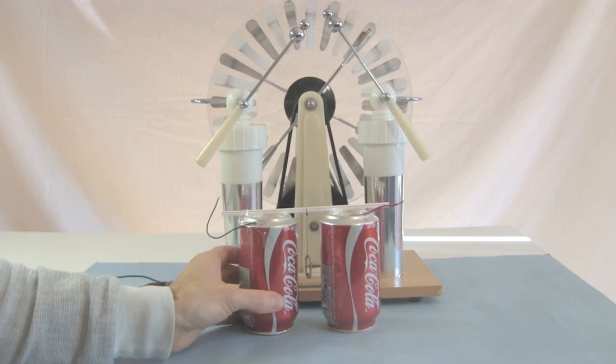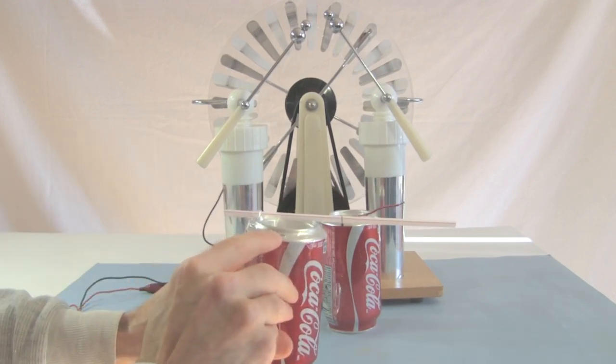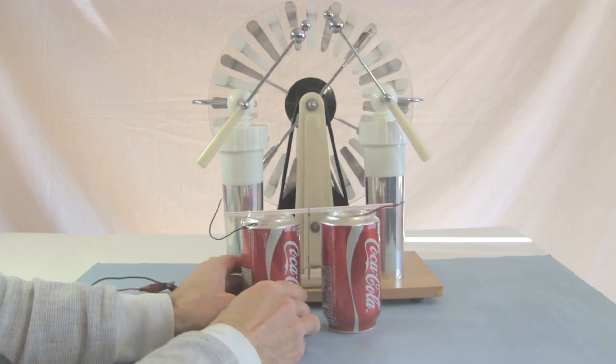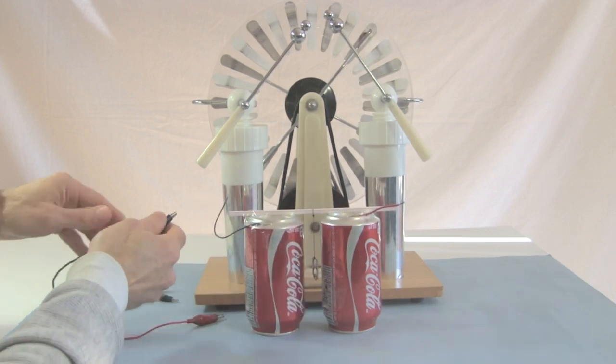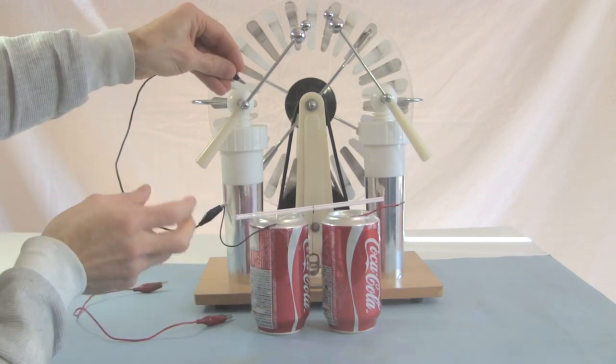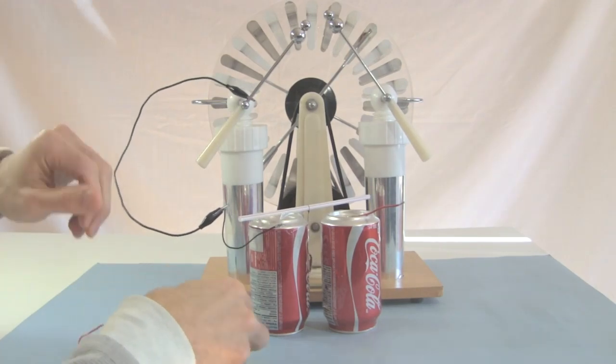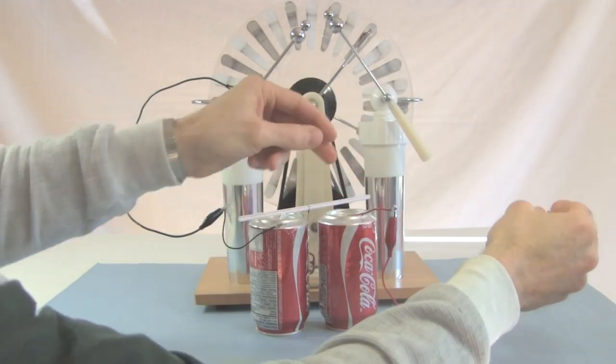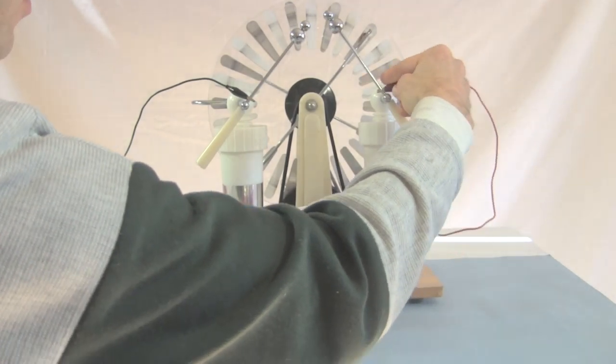Here I have a Wimshurst machine. And I've just taped a piece of wire to the top of this can here. I'll connect the other end of that wire to this arm of the Wimshurst machine. And I'll connect the end of this wire on the other can to the other end of the Wimshurst machine.